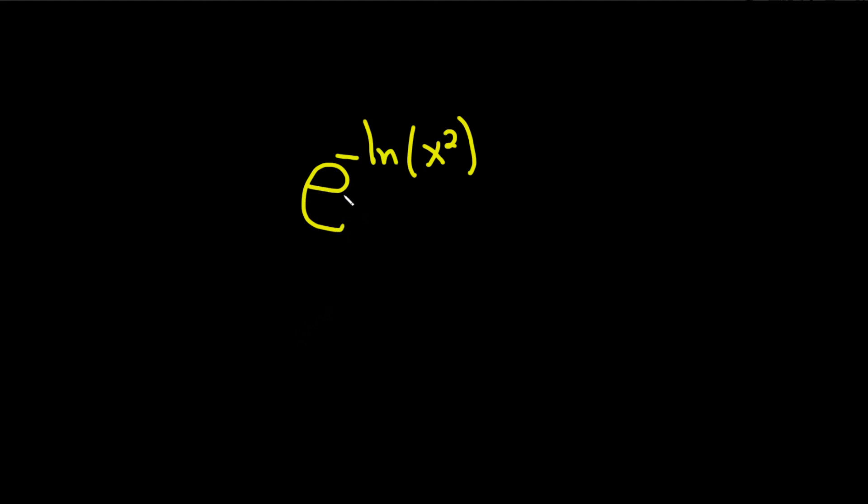Simplify the expression. We have e to the negative the natural log of x squared. So we're going to try to use this formula. If you have e to the natural log of x, that is equal to x. So that is our goal.